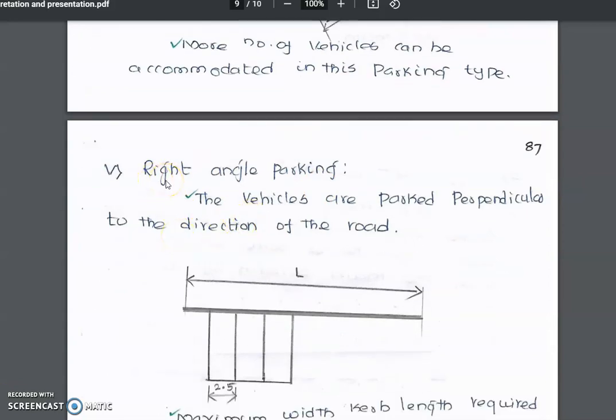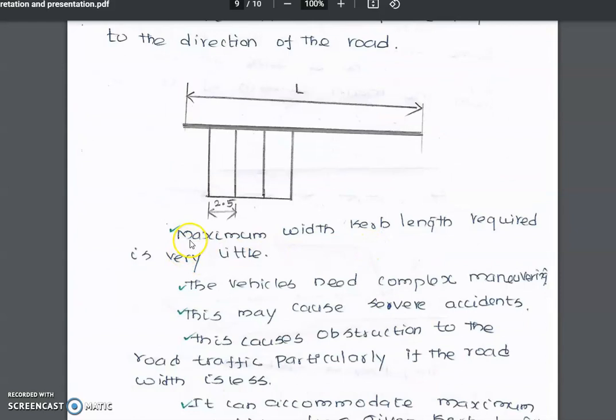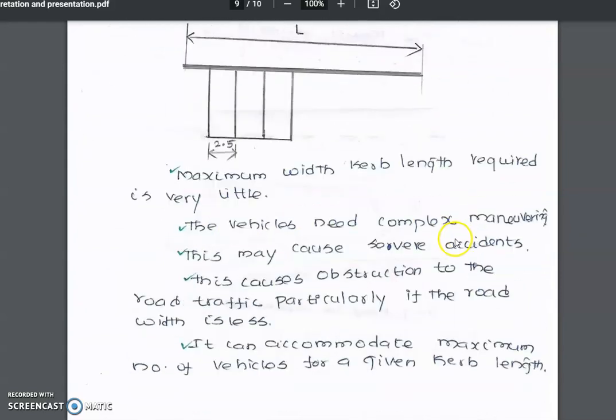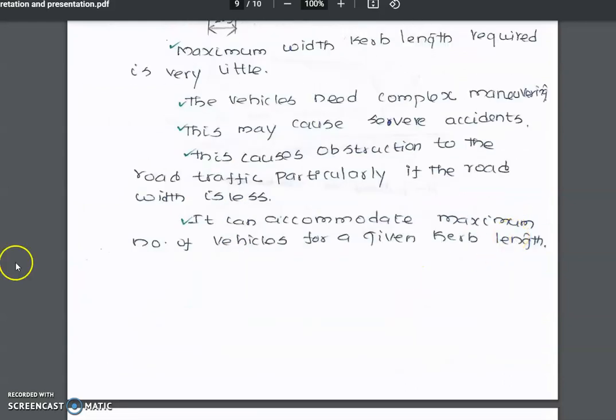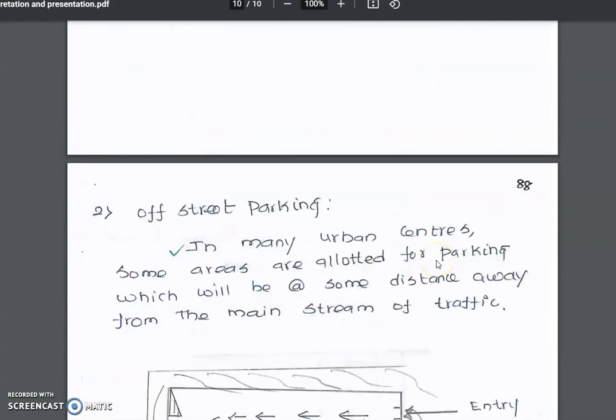In right-angle parking, vehicles are parked perpendicular to the direction of the road. The curb length required is very little. However, vehicles need complex maneuvering, which may cause severe accidents. This causes obstruction to road traffic, particularly if the road width is less. It can accommodate the maximum number of vehicles for a given curb length.